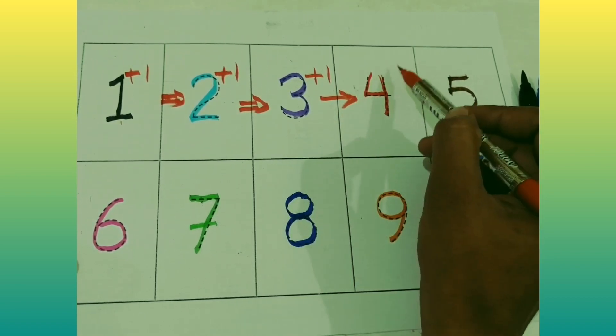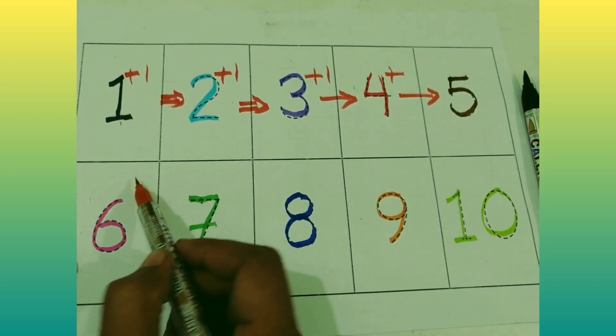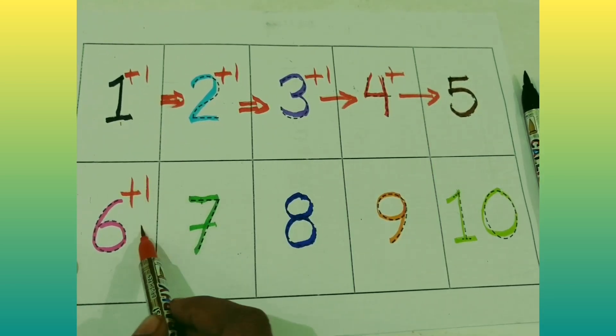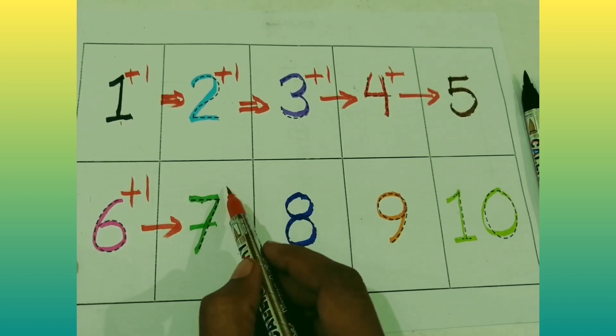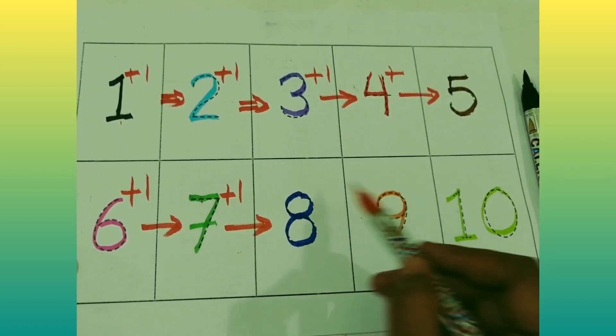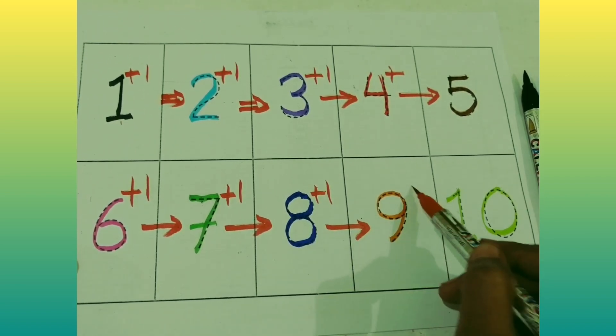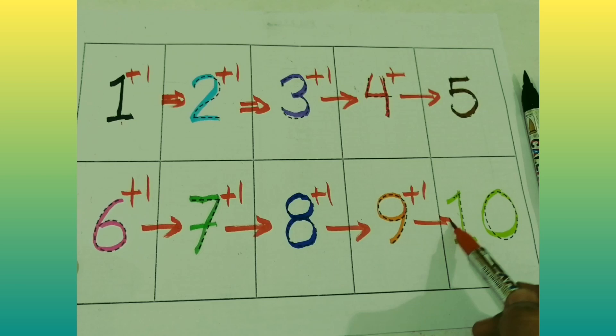Now 8, add 1, 9. 9, add 1, 10. 1 to 10 counting numbers.